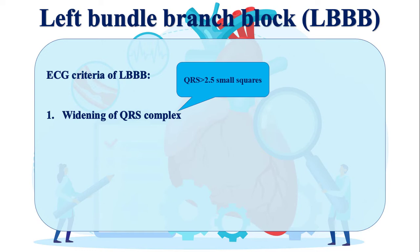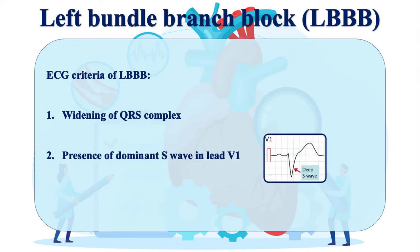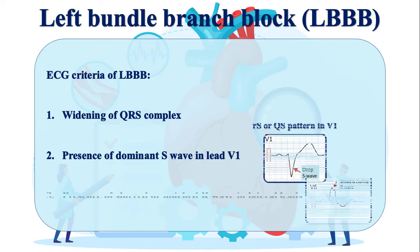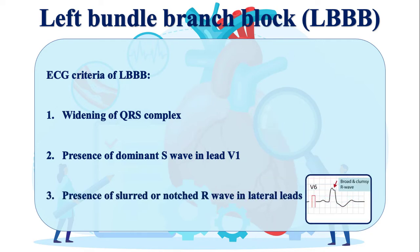The second criterion is the presence of a dominant S-wave in lead V1. Thereby, the QRS complexes may have either an RS or QS pattern in V1. The third criterion is the presence of a slurred or notched R-wave in lateral leads. A slurred R-wave is defined as an R-peak time greater than 60 ms in lateral leads.